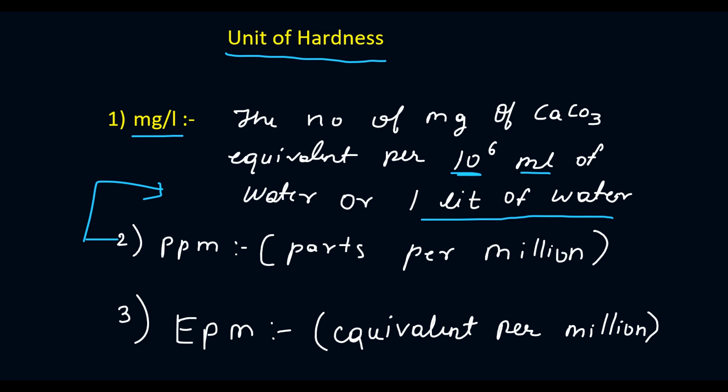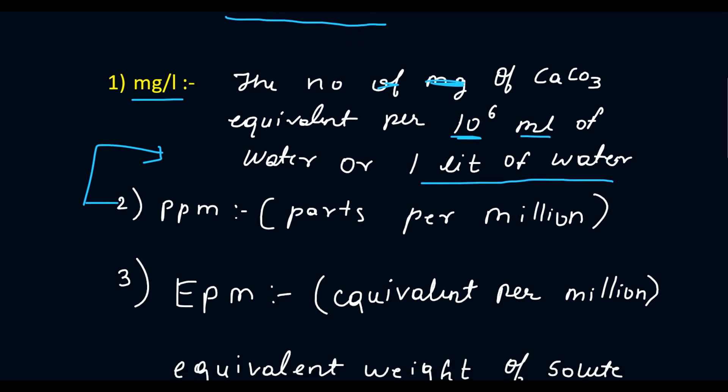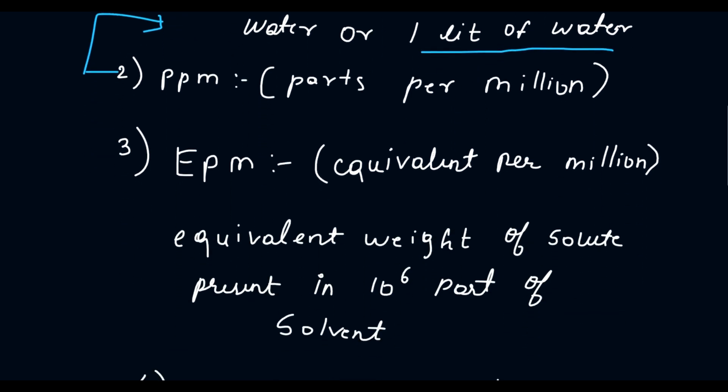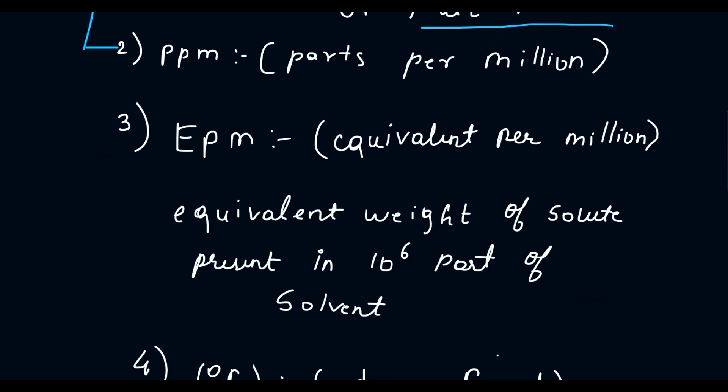PPM is the same as milligram per liter, but here it is the number of CaCO₃ equivalent per 10 raised to 6 milliliters of water. This is PPM — parts per million.